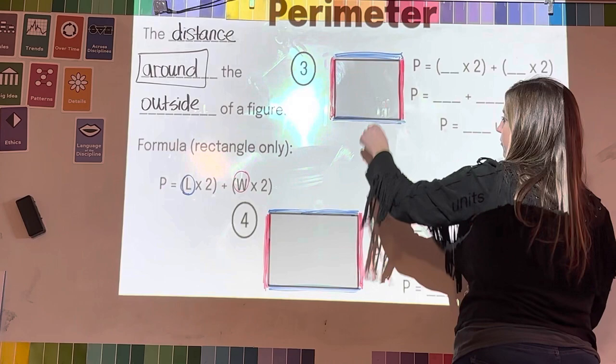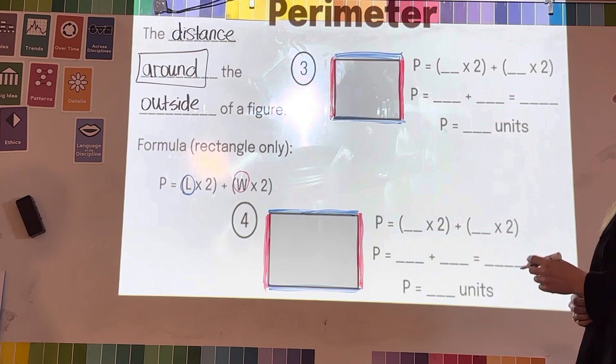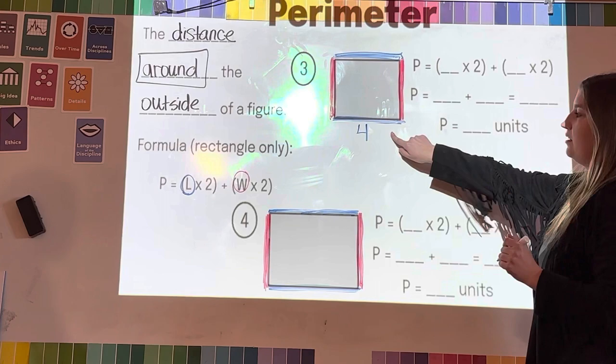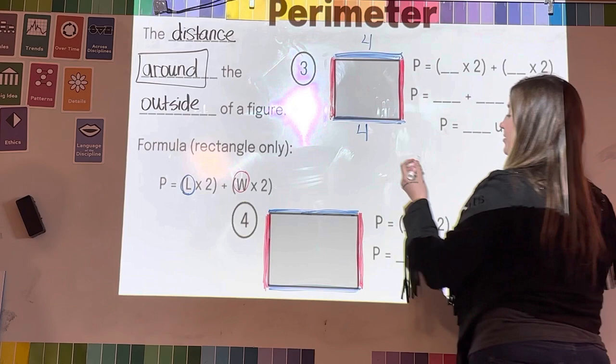Remember we have it as times two because the length is the same for both sides, so two of those, and then two for the width. The length I'm going to use is, I'm just going to do what we did last time and I'm going to keep it as a four. So if this length right here is four, I know this one is four.